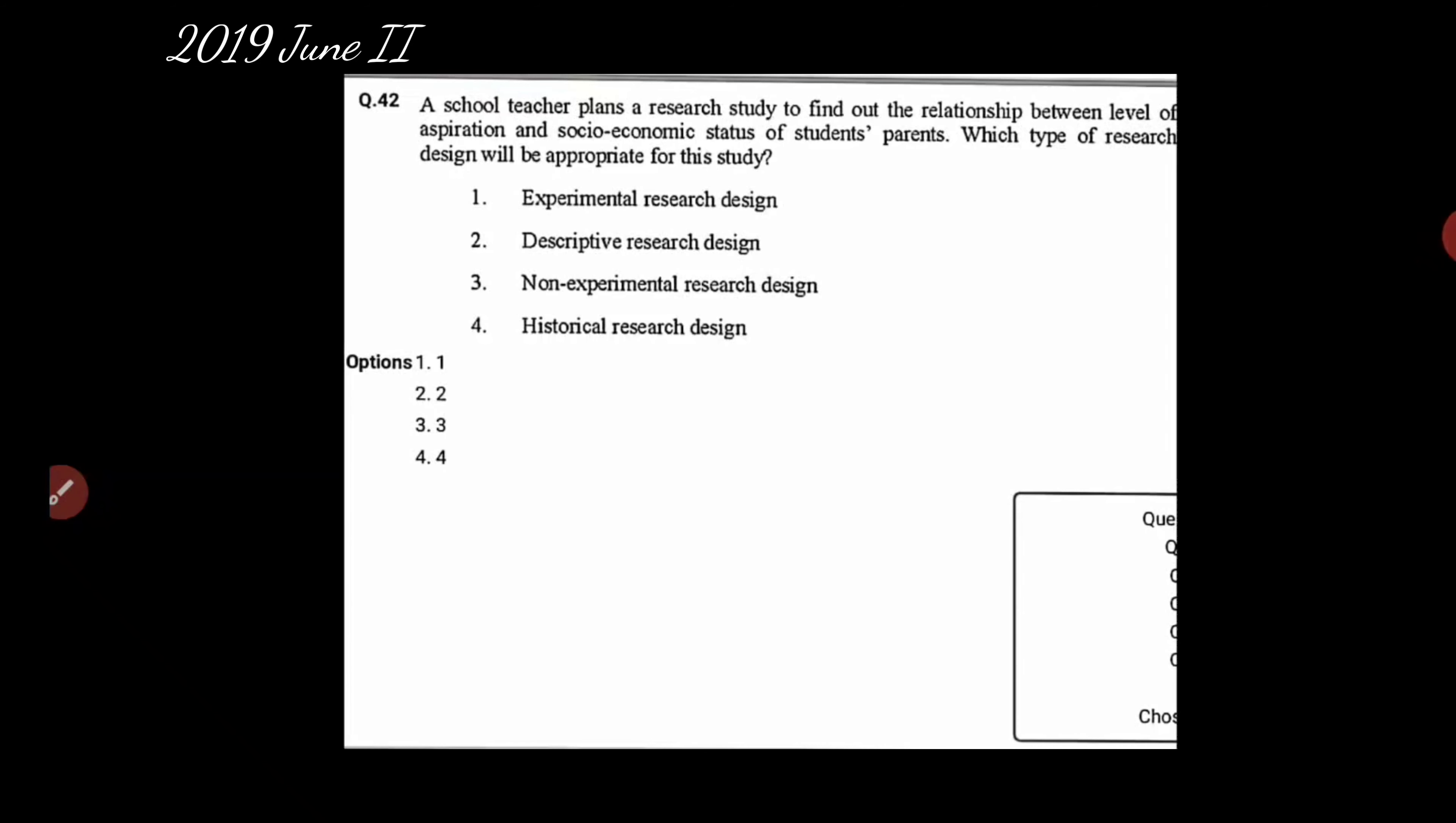A school teacher plans a research study to find out the relationship between the level of aspiration and the socioeconomic status of students' parents. Which type of research design will be appropriate for this study? Experimental research design, descriptive, non-experimental, historical? I'd like to say something here: do not be freaked out by the word research design. Just replace the word design by method for now, because design and research method - they are different but very related. The basic idea is the same.